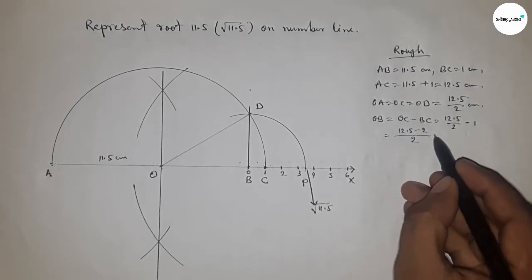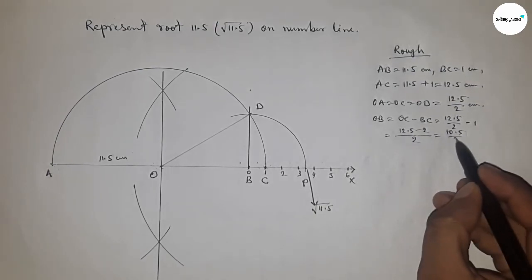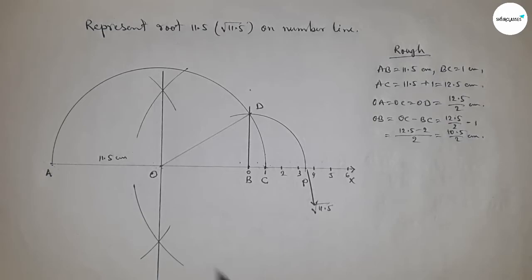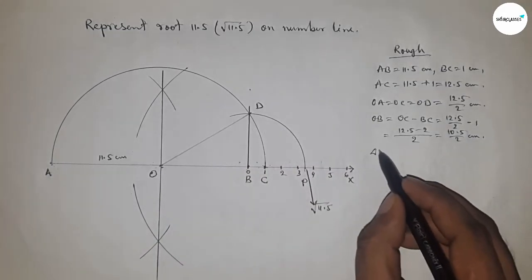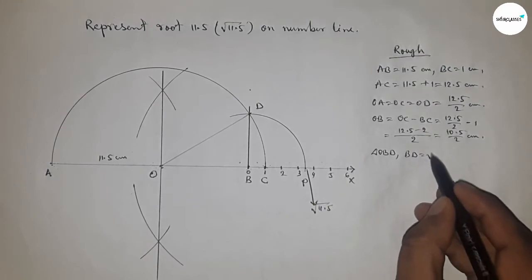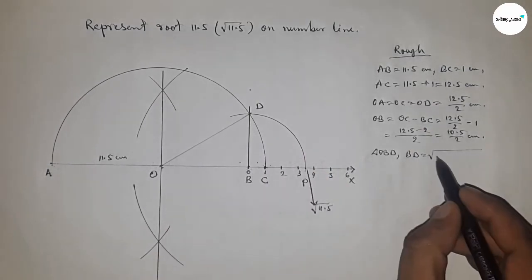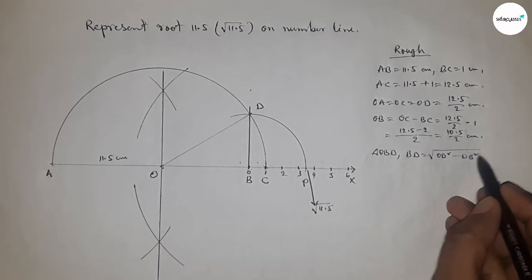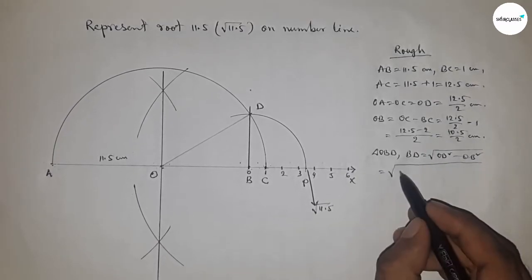Now from right angle triangle OBD, BD equals, by Pythagoras theorem, hypotenuse squared minus base squared. So OD squared minus OB squared. Now putting the values of OD and OB.